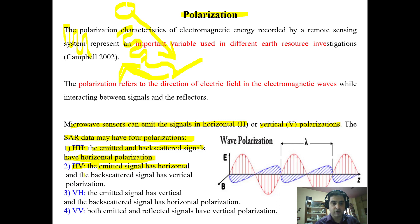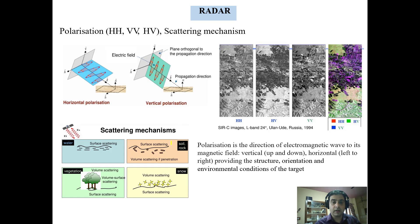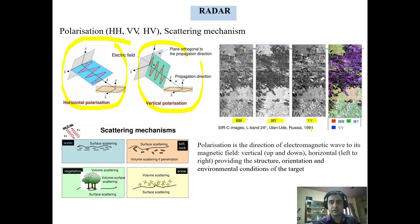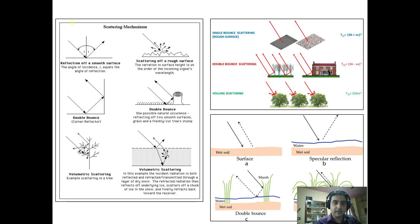In HV polarization, the emitted signal is horizontal and the backscatter is vertical. VH polarization is where the signal emitted from the radar is vertical and the received signal is horizontal. VV means both the emitted and reflected signals are vertical with no change of polarization. You can see how HH backscatter, HV backscatter, and VV backscatter images look, along with an FCC using HH, HV, and VV band combinations.